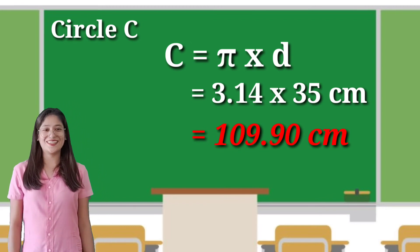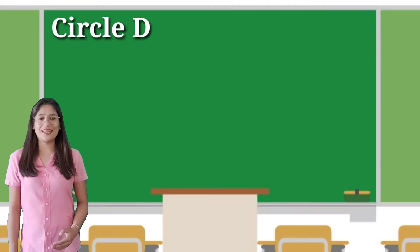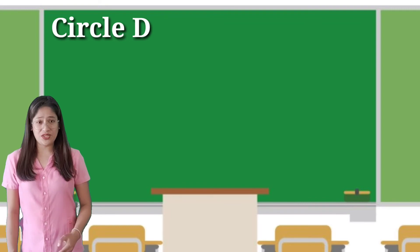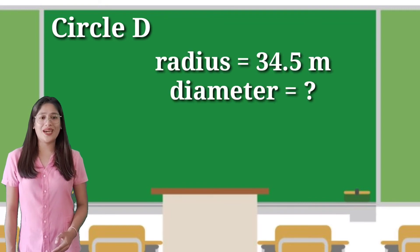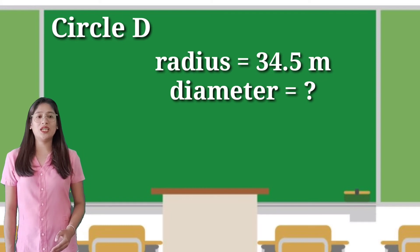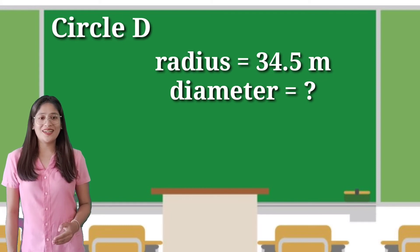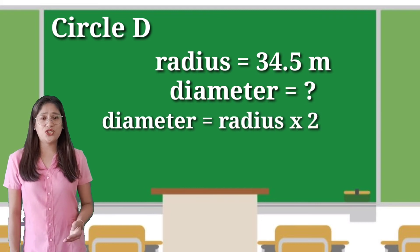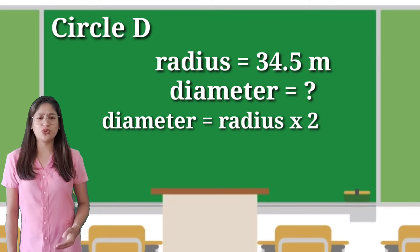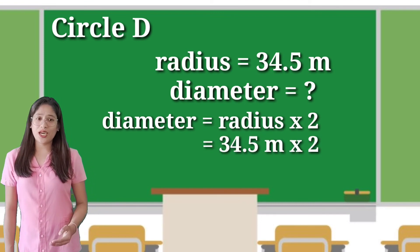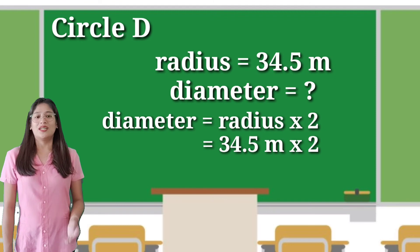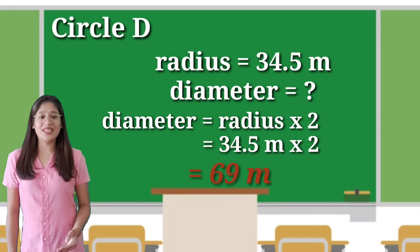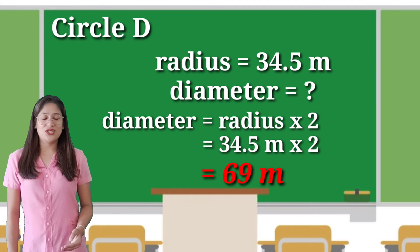In circle D, the given is the radius, which is 34.5 meters. We will find the diameter. We will use the formula: diameter equals radius multiplied by 2. So 34.5 meters multiplied by 2 equals 69 meters. The diameter is 69 meters.